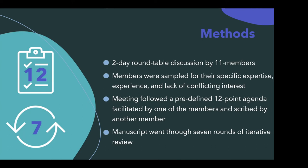The meeting followed a predefined 12-point agenda. One of the members who was present at the 2006 World Rugby meeting facilitated the discussions, while another member would scribe down any discussion points, questions, or concerns. The manuscript that came out of these meetings went through seven rounds of iterative review, which refers to a process in which stakeholders provide immediate feedback and actively edit it to improve and make the consensus statement more inclusive towards community-based players.